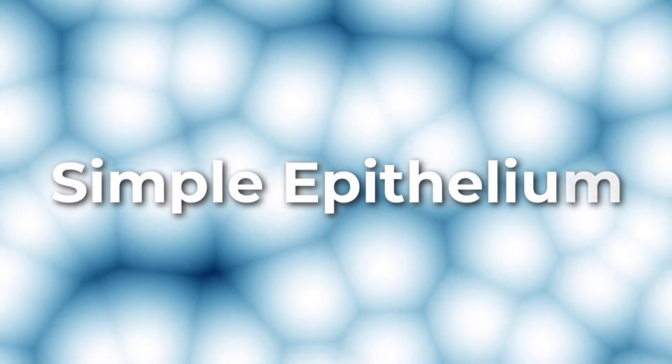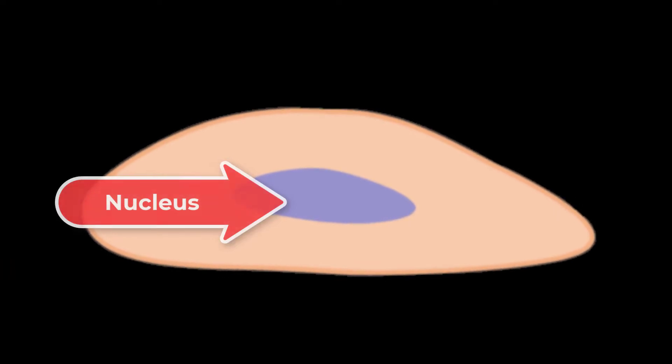Simple epithelium. The cells in simple squamous epithelium have the appearance of thin scales. Squamous cell nuclei tend to be flat, horizontal, and elliptical, mirroring the form of the cell.